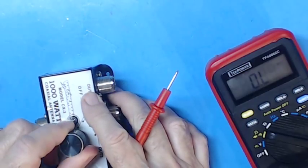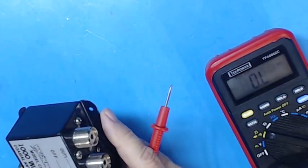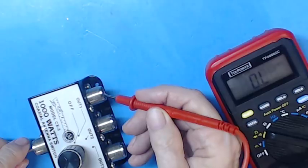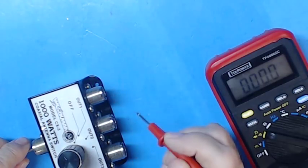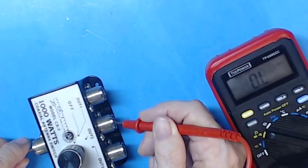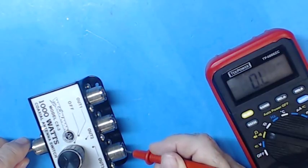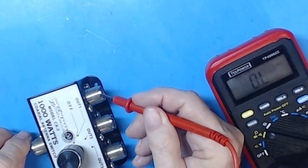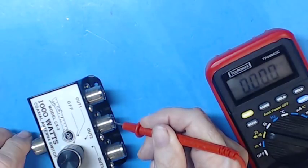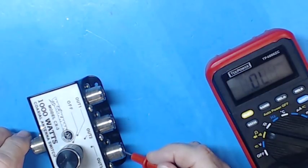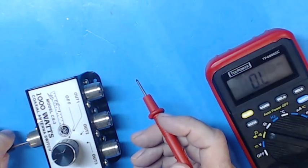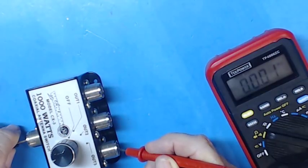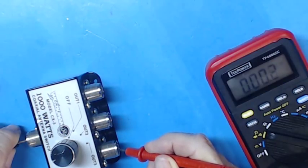Now we'll go to the first position, which is one. And I assume it's this one up here. So we should have continuity now, which we do. And we check the other ones. That's open. That's open. So that one looks good. We'll go to two. We'll go back to one, it should be open. It's open. Two. Continuity. Three. Open. And lastly, we'll do number three. So we'll go back and check. One. Open. Two. Open. Three. Continuity.